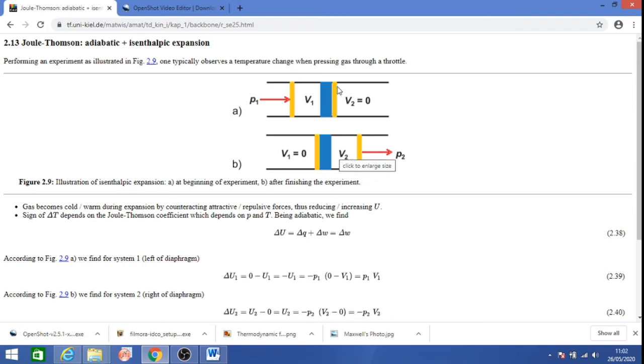The gas molecules start expanding the gas on the right side. Initially, volume is zero for the gas in the system on the right side, but after the expansion, the final volume will be V2. For complete compression of the gas from the left region, there is an expansion of the gas on the right side.